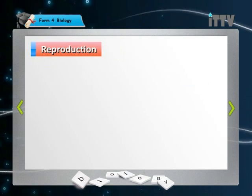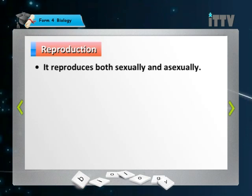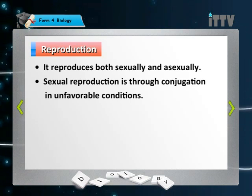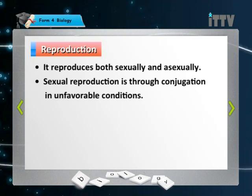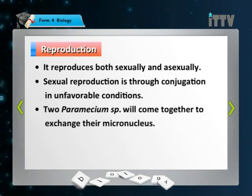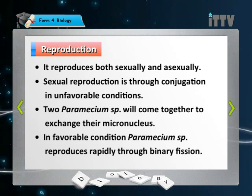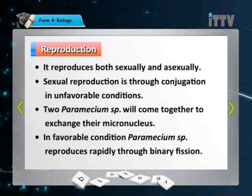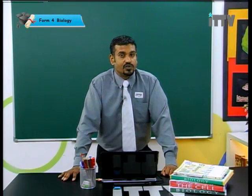Now let's look at Paramecium reproduction. It reproduces both sexually and asexually. Sexual reproduction is carried out through a process called conjugation in unfavourable conditions — two Paramecium come together to exchange their micronucleus. In favourable conditions, the Paramecium reproduces rapidly through a process called binary fission.